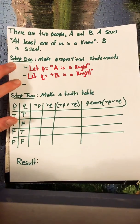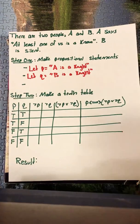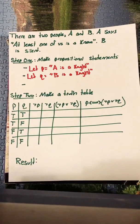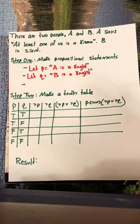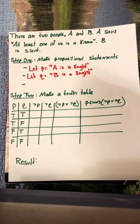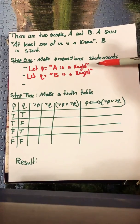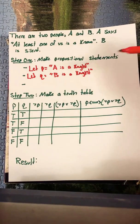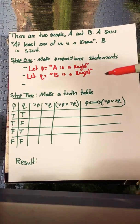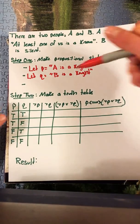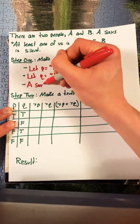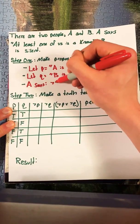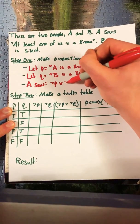Using these variables we can determine what A is saying. By saying at least one of us is a knave, this is actually the statement A or B is a knave. Because we've set it up so that both P and Q are A is a Knight and B is a Knight, A says not P or not Q.